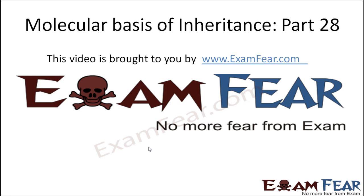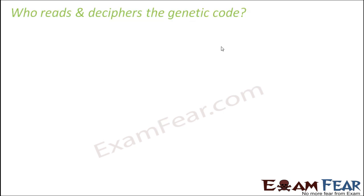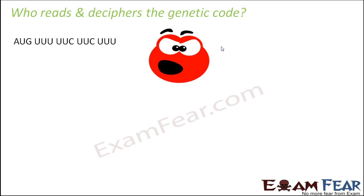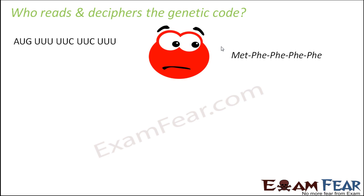This video on molecular basis of inheritance part 28 is brought to you by examfear.com. Now the question is, who reads and deciphers the genetic code? We now know that there is a concept of genetic code based on which we can tell the sequence of amino acids. Once the sequence of amino acids is known, the amino acids can be joined together by peptide bonds to form polypeptides, which will form proteins.